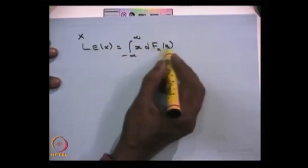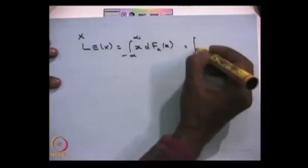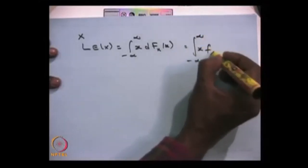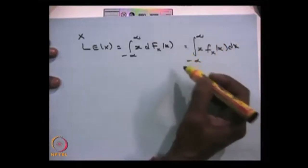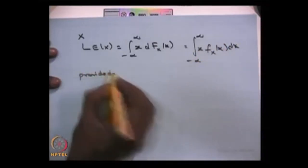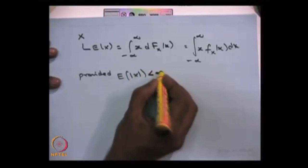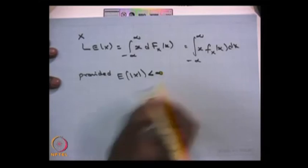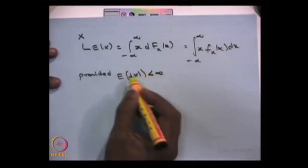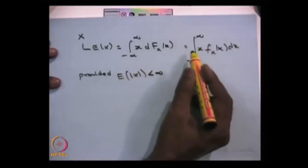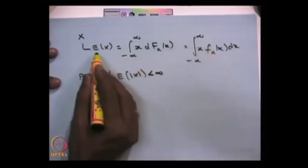If the random variable is continuous, then the CDF is a continuous function, and the expectation becomes the integral from minus infinity to infinity of X times f(X) dx. We also have to cross-check whether this integration converges, provided that the expectation of |X| converges, since absolute convergence implies convergence. Whenever you replace X by |X| and this condition is satisfied, then whatever value the integration gives is the expectation of the random variable.